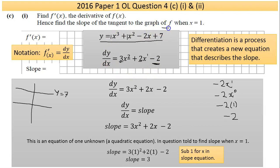Now I have my differentiated equation. The second part is to find the slope when x = 1. dy/dx is just mathematical notation for slope, so the equation I've just found tells you the slope equals that collection of terms. Substituting x = 1 throughout, the right-hand side converts to a number — which comes out as 3. So the slope equals 3.